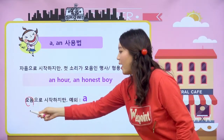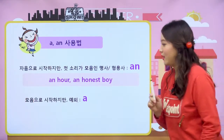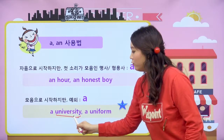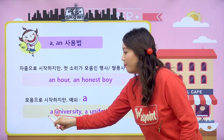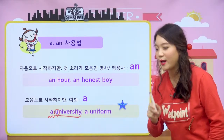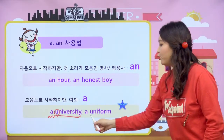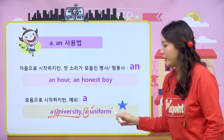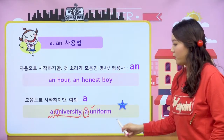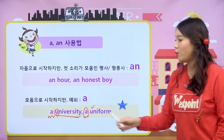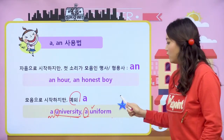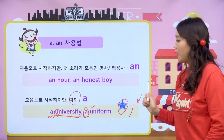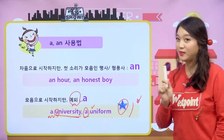모음으로 시작하지만 예외인 것들도 있습니다. university — 분명히 모음으로 시작하지만 앞에 a가 와요. 그래서 a university. uniform도 마찬가지예요. a university, a uniform 이렇게 university와 uniform은 예외입니다. 선생님이 계속 이야기하지만 예외는 외워야 된다. 예외는 꼭 잘 기억해 주세요. 예외인 만큼 시험에 정말 잘 나오기 때문이에요.